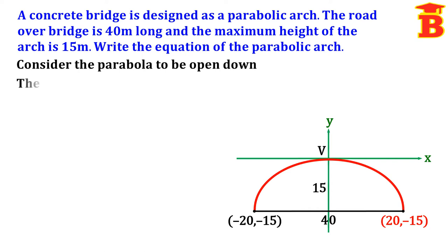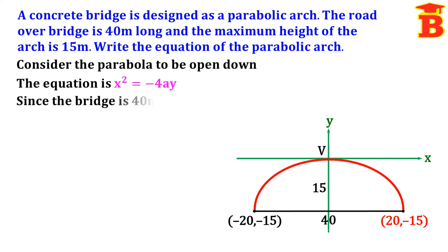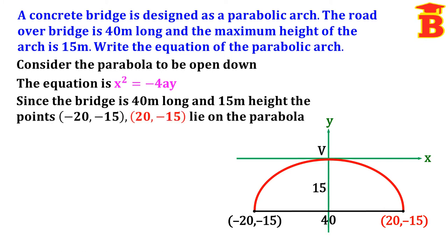The parabola opens up and down, so the equation is x² = −4ay. The bridge is 40 meters long and 15 meters high, so the points (−20, −15) and (20, −15) lie on the parabola. We substitute the point (20, −15): 20² = −4a × (−15). Substituting (−20, −15) gives the same result since (−20)² = 20².